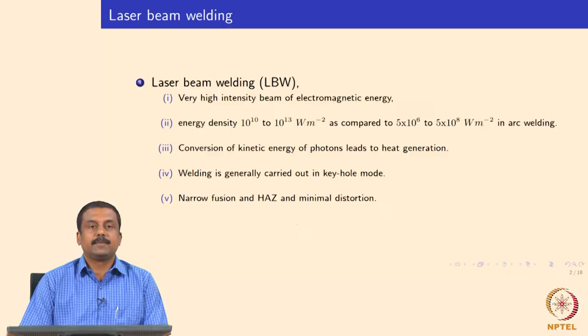We will move on to the next welding process in our introduction to welding processes used in the automotive industry. We looked in detail at resistance spot welding, which has unique characteristics and is used for welding thin sheets of automotive steels. Another welding process commonly used in automotive industry is laser beam welding, which has its own advantages and disadvantages compared to resistance spot welding. We will look at the working principles of laser beam welding and the characteristics of laser welds made in automotive steels.